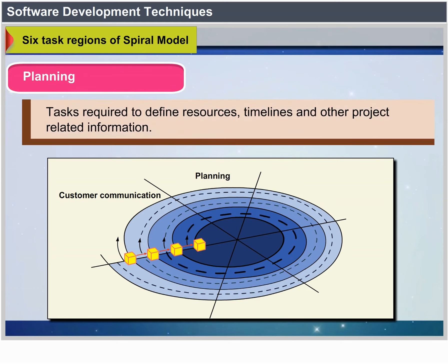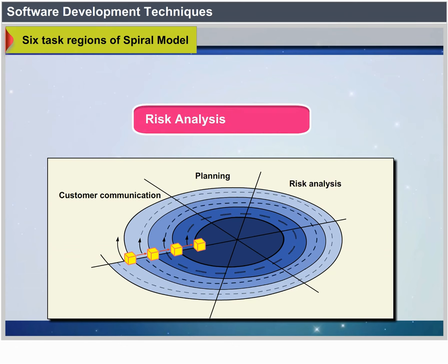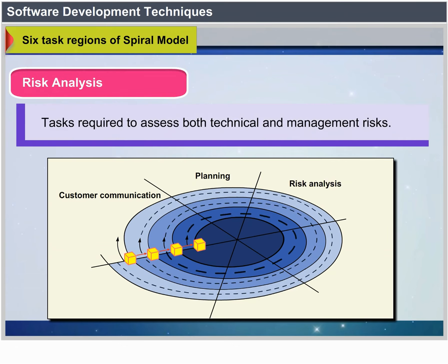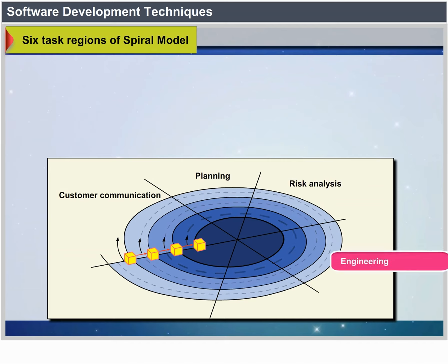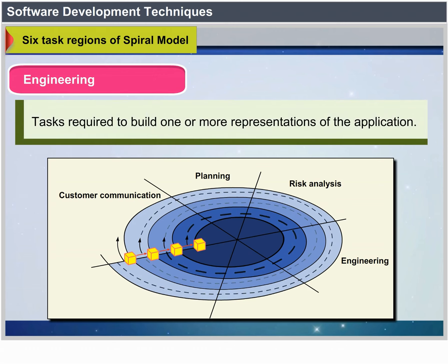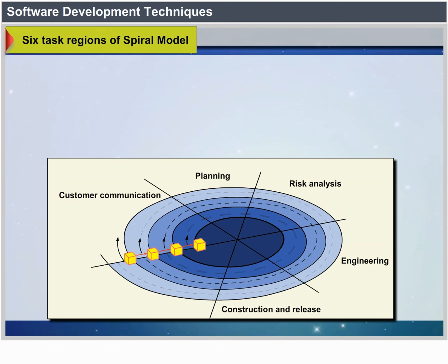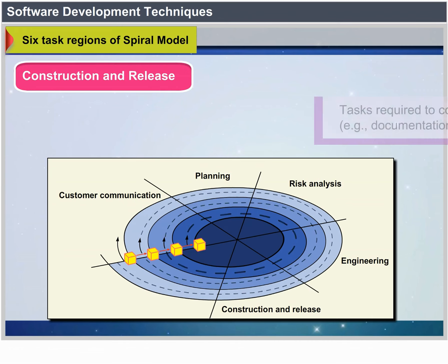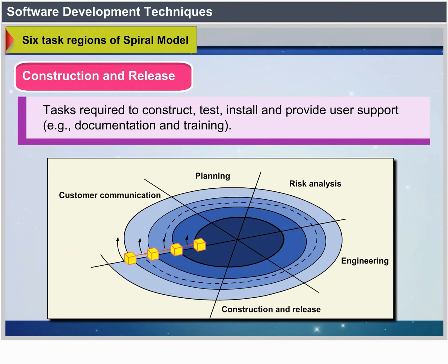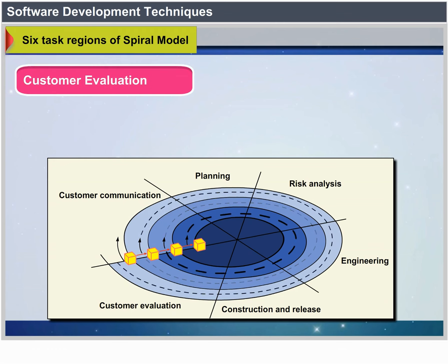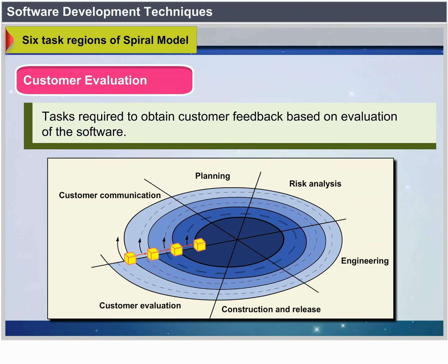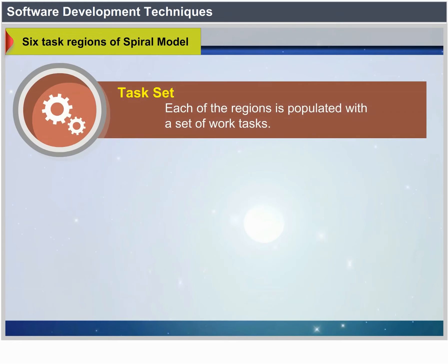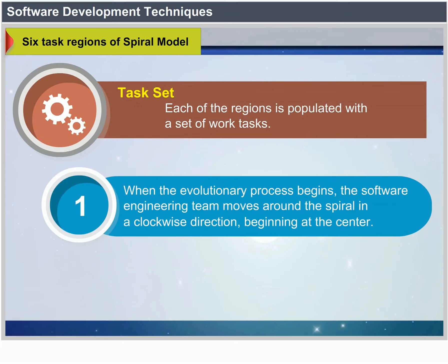The Spiral Model contains six task regions: timelines and other project-related information; Risk Analysis — tasks required to assess both technical and management risks; Engineering — tasks required to build one or more representations of the application; Construction and Release — tasks required to construct, test, install and provide user support including documentation and training; Customer Evaluation — tasks required to obtain customer feedback based on evaluation of the software; and a Task Set — each region is populated by a set of work tasks.